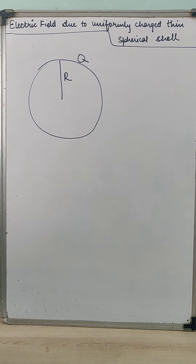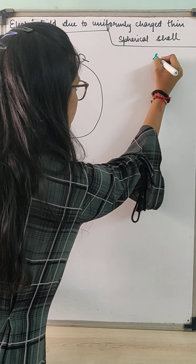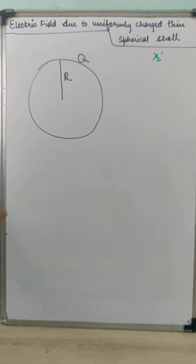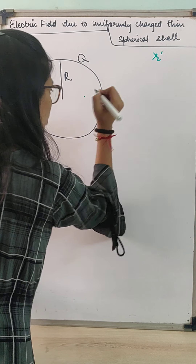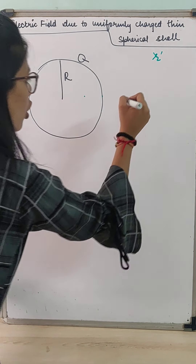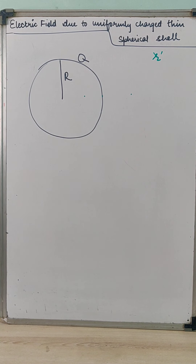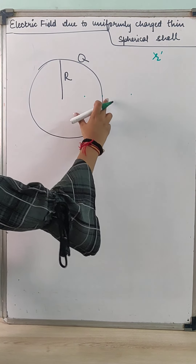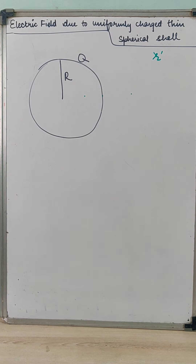We need to find the electric field at distance small r. This distance could be inside the spherical shell, on the surface of the spherical shell, or outside the spherical shell. So there are three cases: one, electric field inside the shell; two, electric field outside the shell; and three, electric field on the surface of the shell.